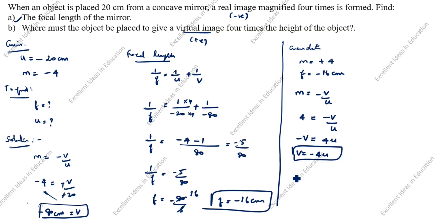We will use focal length formula: 1 by f is equal to 1 by u plus 1 by v. 1 by f value we know is minus 16. 1 by u plus 1 by minus 4u. 1 by minus 16 is equal to - we will take 4u as common - so 4 minus 1, plus 3 divided by 4u equal to 1 by minus 16.